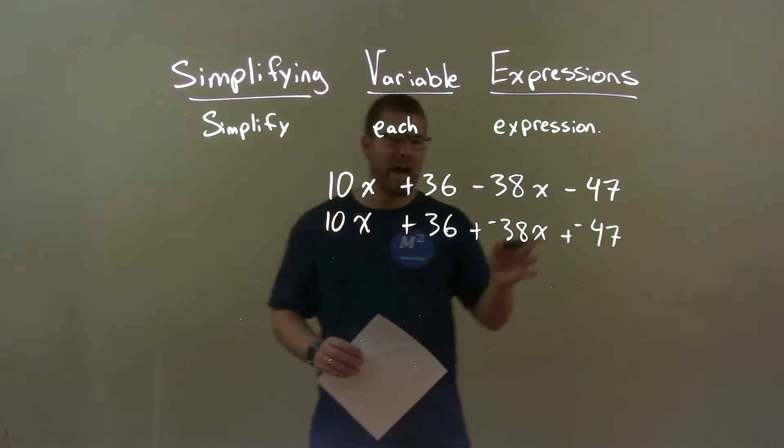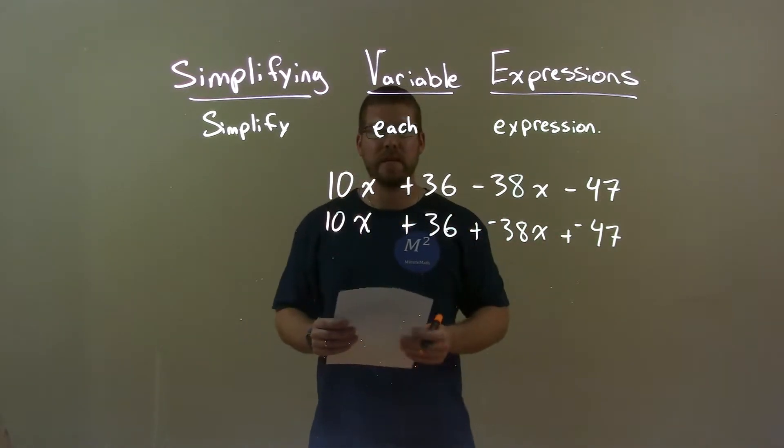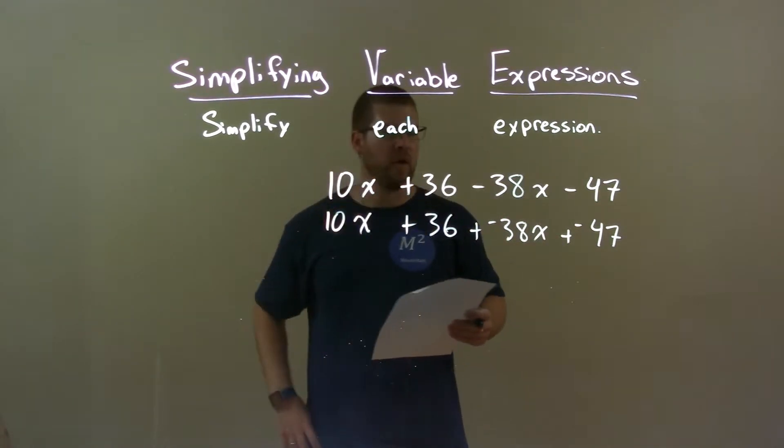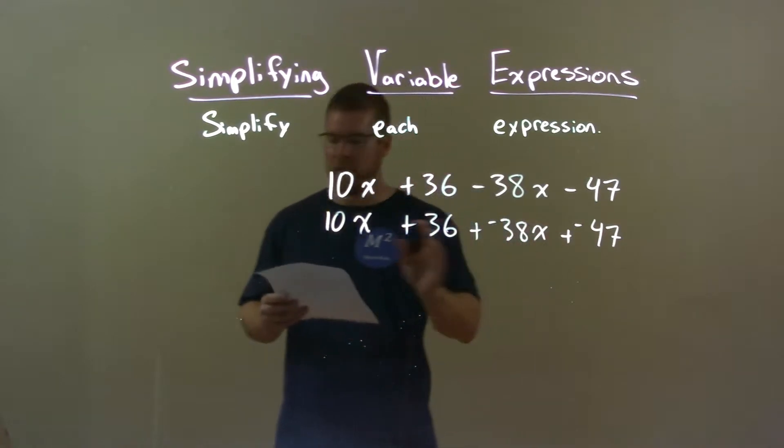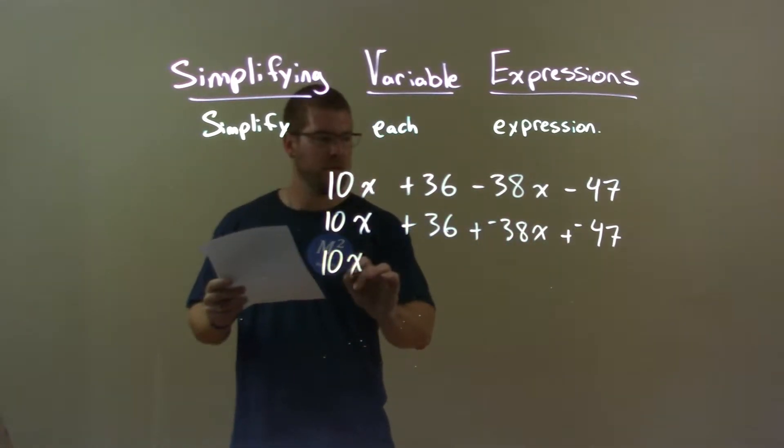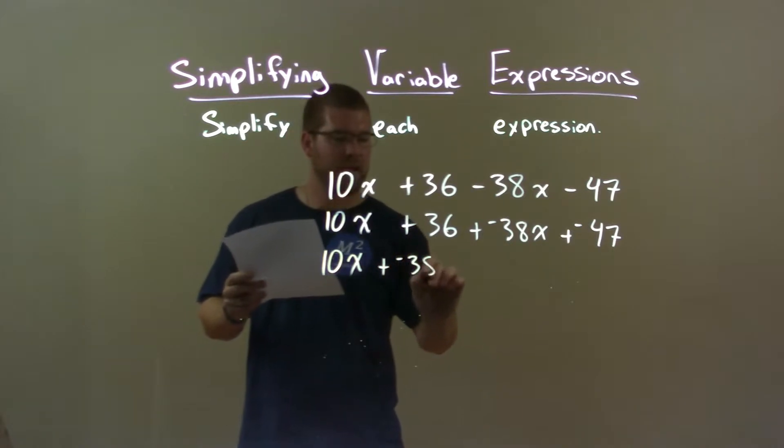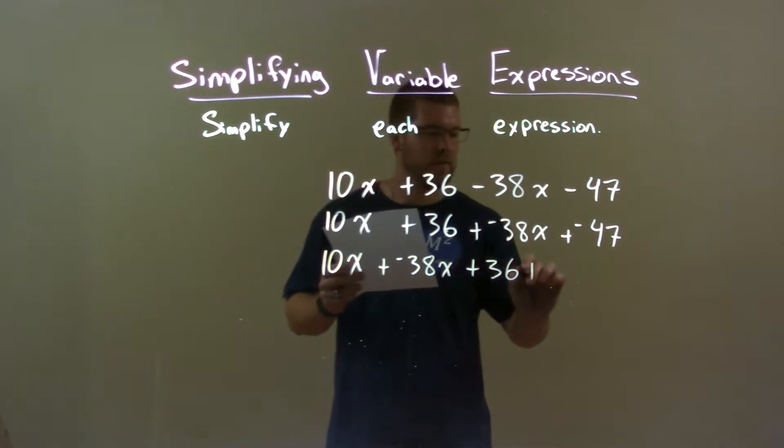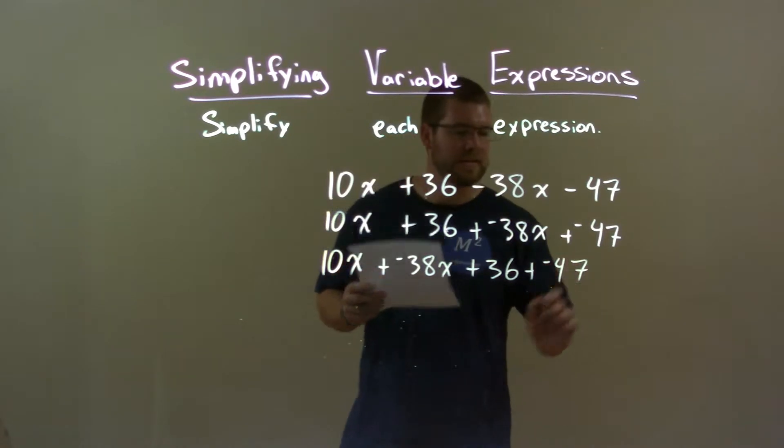Alright, now I rearrange these to have the like terms next to each other. I put my x's first then my numbers. So, 10x plus a negative 38x plus 36 plus a negative 47.